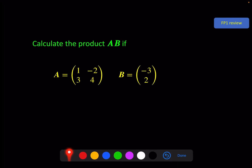To multiply A and B, we need to make sure that we've got the same number of columns as rows. Here we've got two columns and here we've got two rows, so we're okay. Remember the order is very important. In the question AB, we've got to make sure A is on the left and B is on the right.